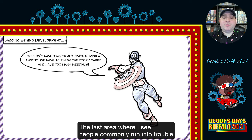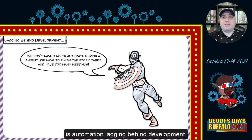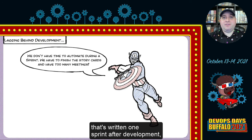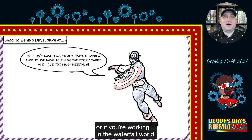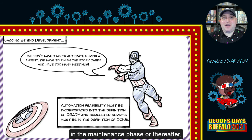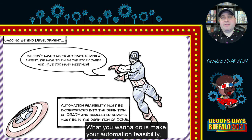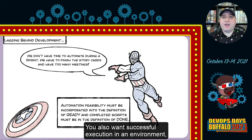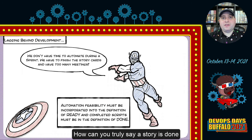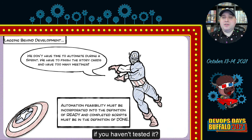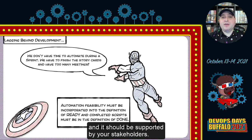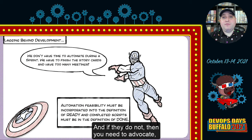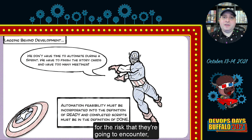The last common challenge is automation lagging behind development — automation written one sprint after development, or in the maintenance phase. You want to make automation feasibility part of your entry state criteria so automation is in scope upfront, and successful execution in an environment part of your done state criteria for a story. How can you truly say a story is done if you haven't tested it? Your team should follow that working agreement, supported by stakeholders — or you need to advocate for the risk of defects leaking into production.